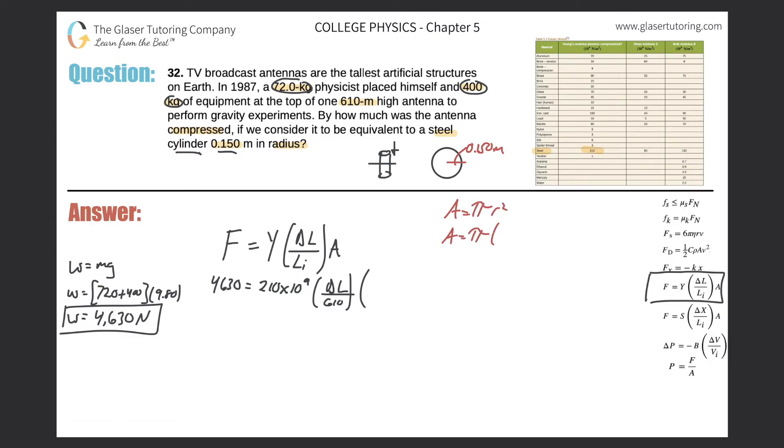So area will be equal to pi times 0.150 squared. Simply plug that into your calculator. Pi times 0.15 squared comes out to be 0.0707, and that's meters squared. So now we can take that value and plug it in, 0.0707, and let's clean it up.